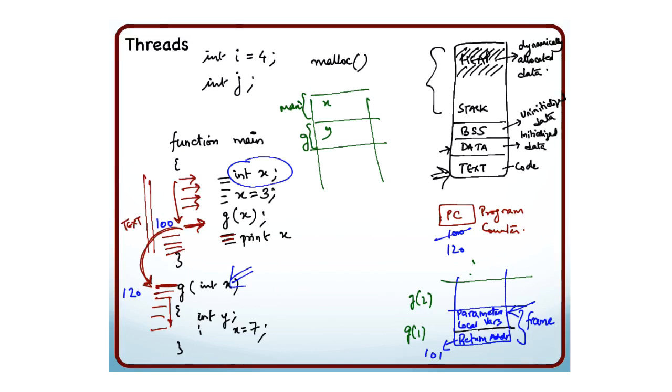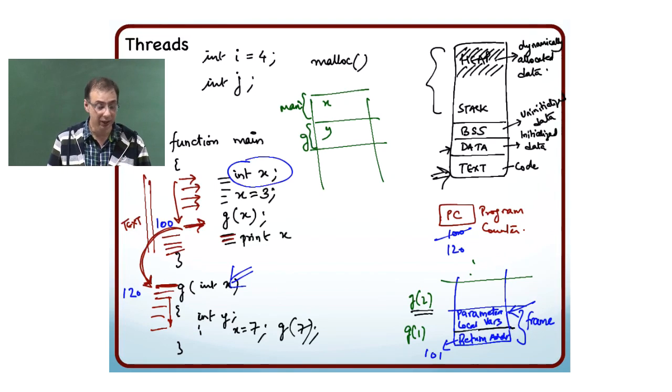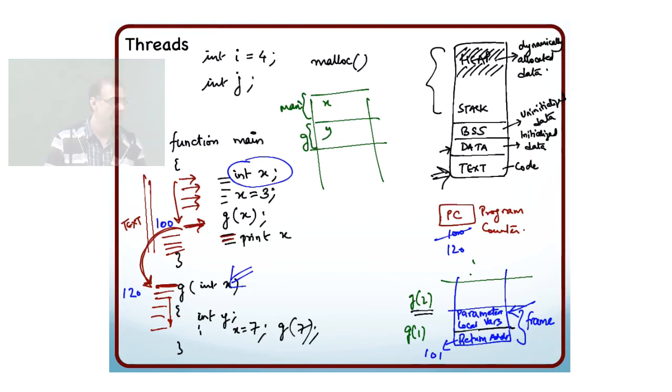Now if this function g again makes a call to g again with let us say value 7, then another stack frame of g will be created. These 2 stack frames are completely independent of each other, both of them are for the function g but they are independent. If I am again calling g here, I will be storing the return address which is the next instruction after this. That is where I am supposed to return after the second invocation of g. Then I will create another copy of int x and the local variables. All of that will be done on the stack frame.